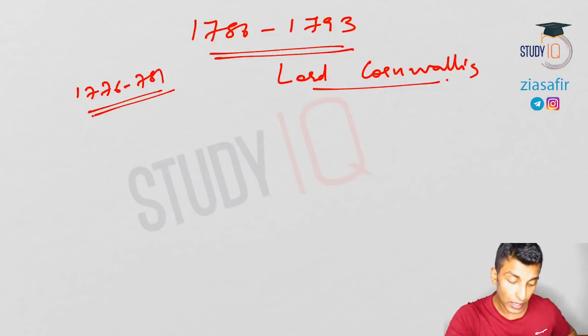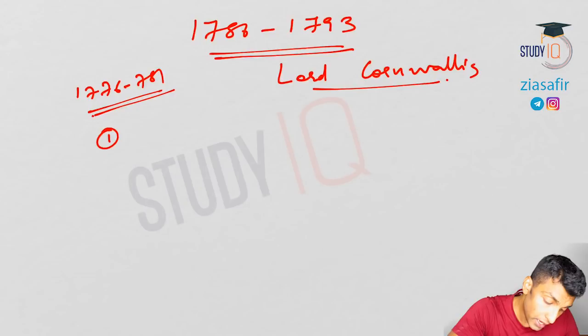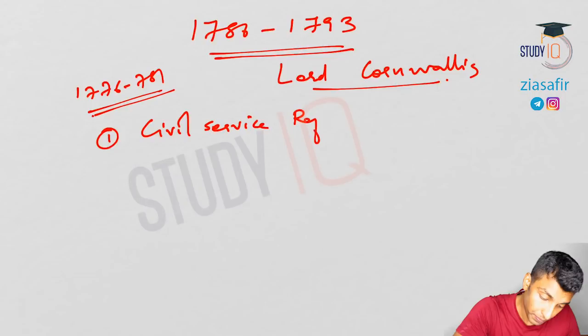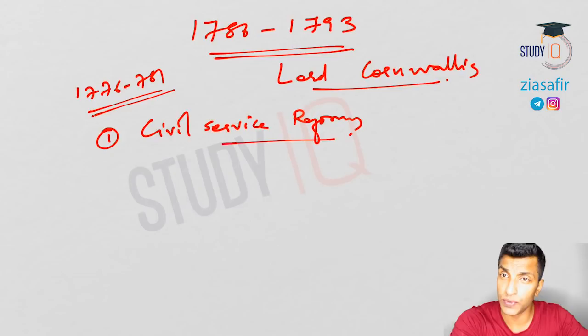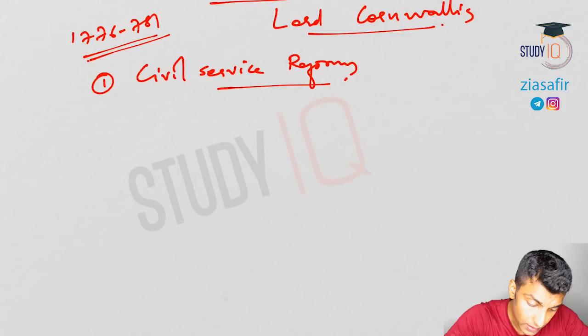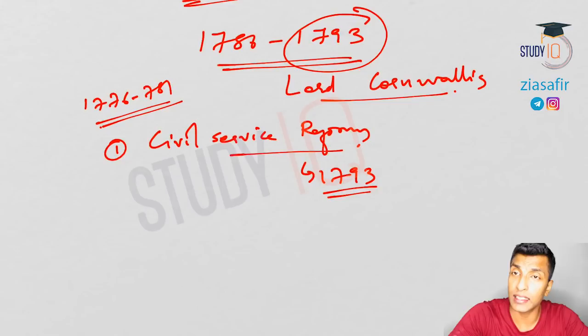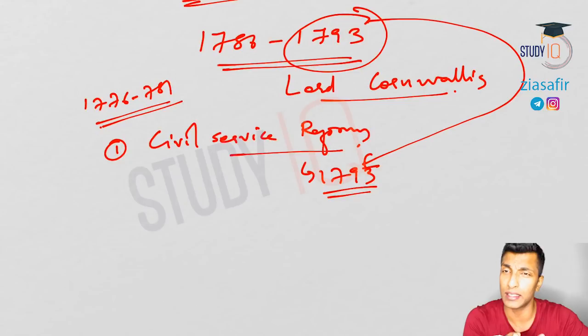Starting with civil service reforms: Lord Cornwallis introduced civil services and is known as the Father of Indian Civil Service. This was directly asked in the 2013 Prelims. He introduced civil service in the year 1793, which is his last year. Although he came back to India later for a few months, that second period is not significant for discussion.